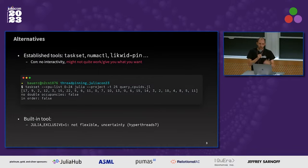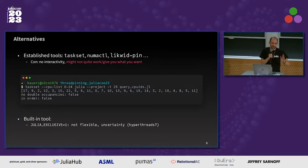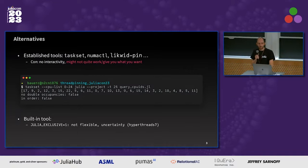There's one built-in tool I want to mention: the Julia exclusive variable. You can set it to one and it gives you a natural ordering — first thread to first core, second thread to second core, or more precisely, CPU thread. It's good that we have it, but it's inflexible — you set it to one or not, that's it. It doesn't visualize anything. You don't know exactly what it's doing; for example, I'm not sure off the top of my head whether it includes hyperthreads or not. So it's good that we have it, but we need more.